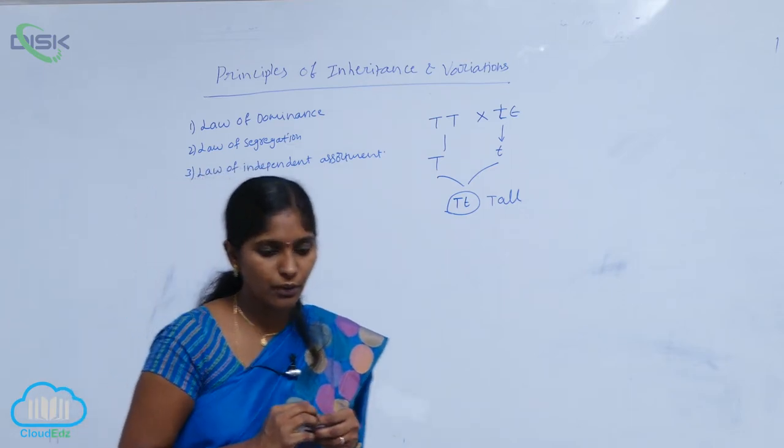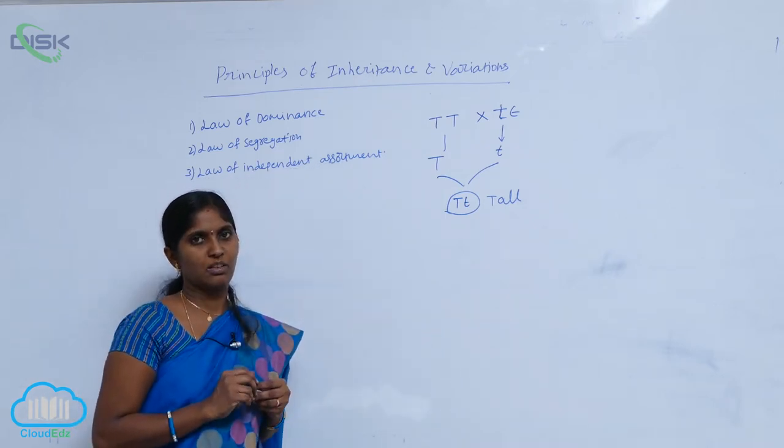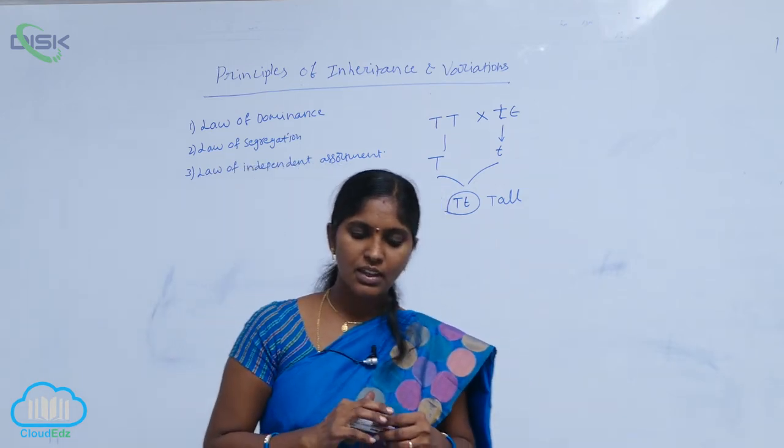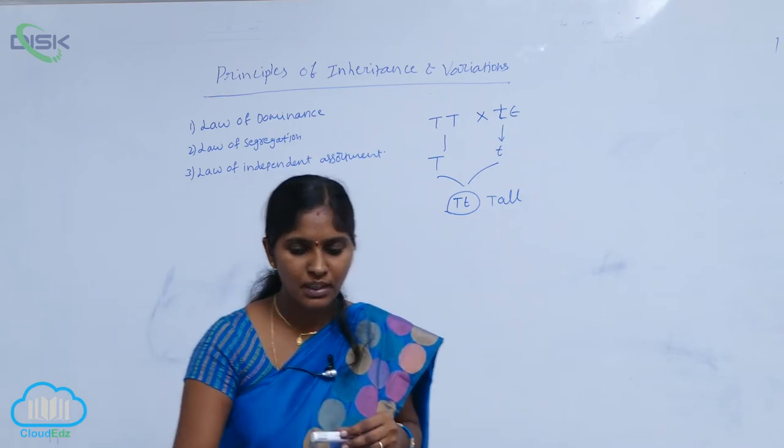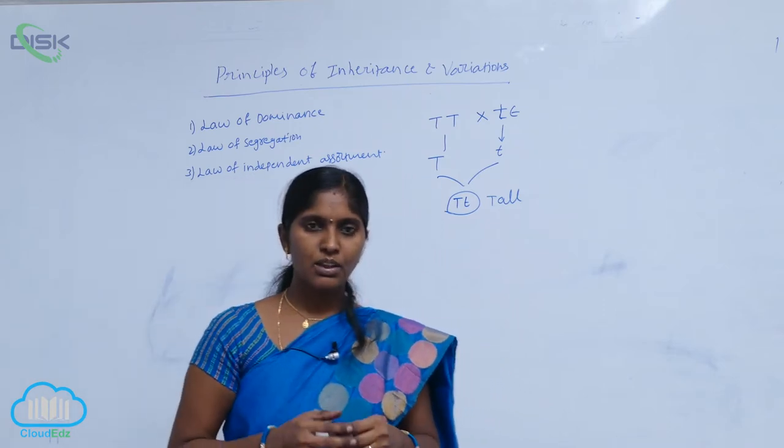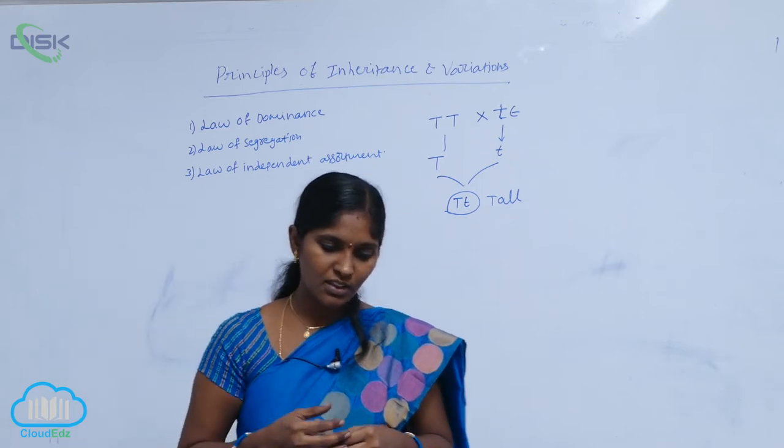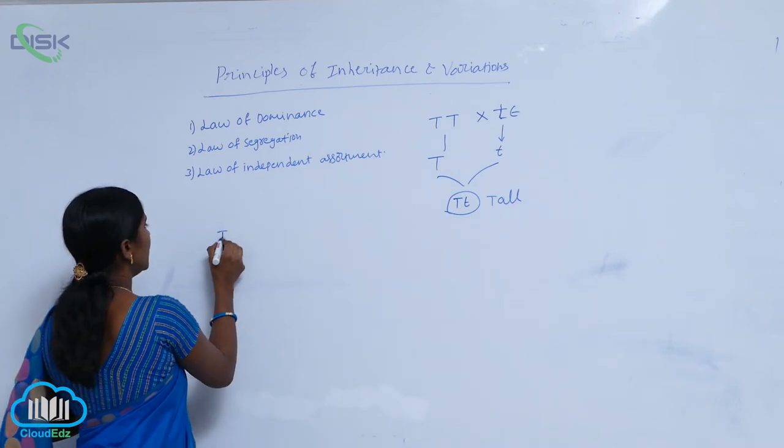But the law of dominance is not universal. Most scientists conducted several experiments based on the law of dominance, but they obtained deviated results. They identified other phenomena, such as incomplete dominance.